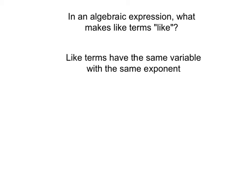Okay, in an algebraic expression, what exactly is it that makes terms like terms? Well, like terms have the same variable with the same exponent. So to be alike, two terms must have the same variable with the same exponent. Let's look at some examples.